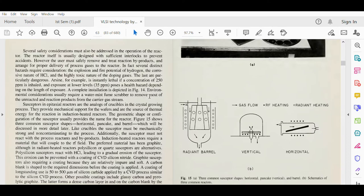Susceptors in production reactors are the analogous of crucibles in the crystal growing process. They provide mechanical support for the wafers and are a source of thermal energy for the reaction in induction heated reactors. The geometric shape or configuration of the susceptor usually provides the name of the reactor.